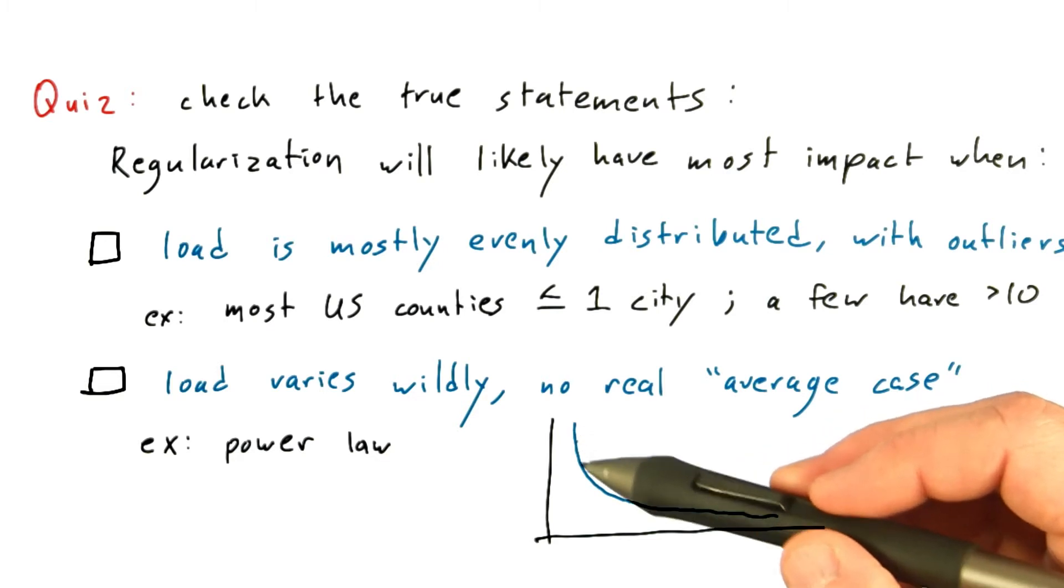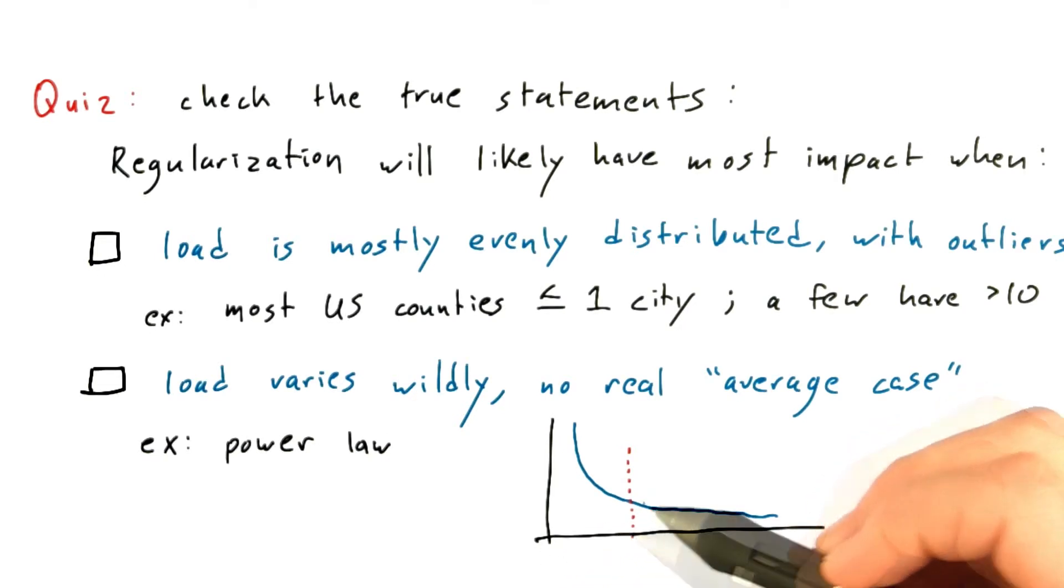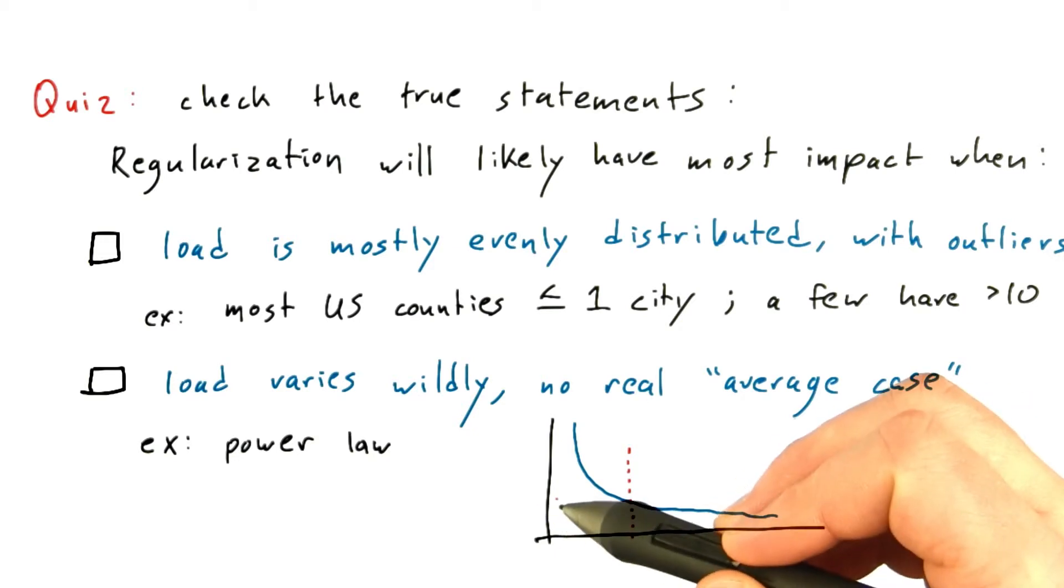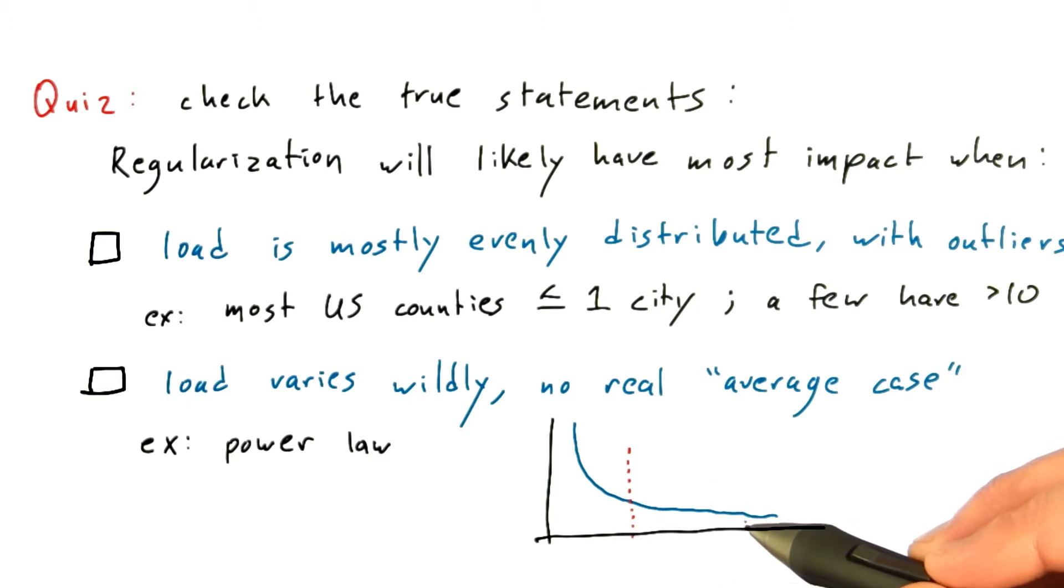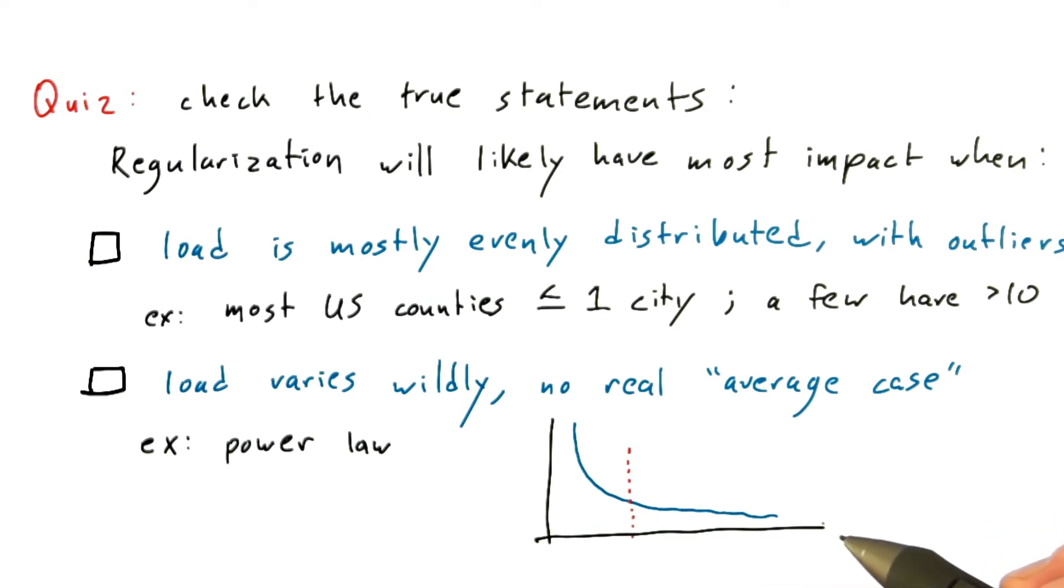And power law looks something like this. And if true, then this would mean that at any level of popularity, a roughly fixed fraction of people will be twice as popular. So in this case you might say that 20% of the people have twice as many followers as the remaining 80% of the people below the line. And that becomes true no matter where you draw the line.